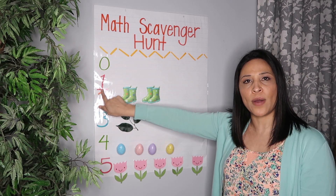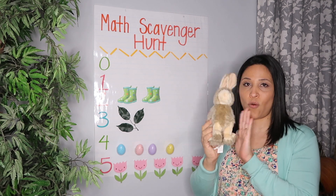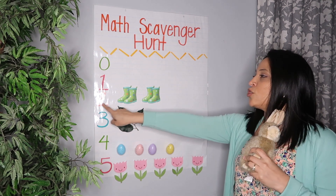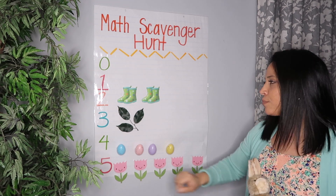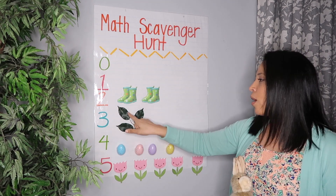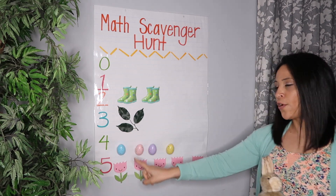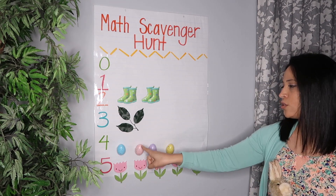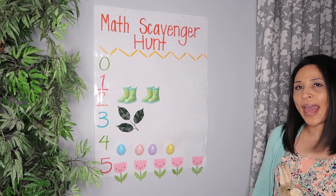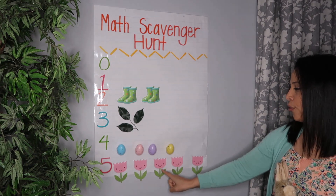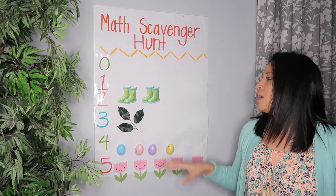Now let's see how all this looks on the chart. Zero — we don't have any items. Number one — I found one bunny. Two — I found two pairs of rain boots. Three — one, two, three leaves. Four — four Easter eggs: one, two, three, four. And five — five flowers: one, two, three, four, five.